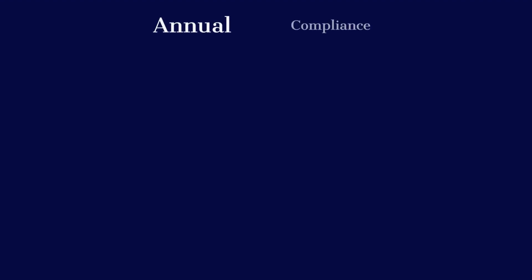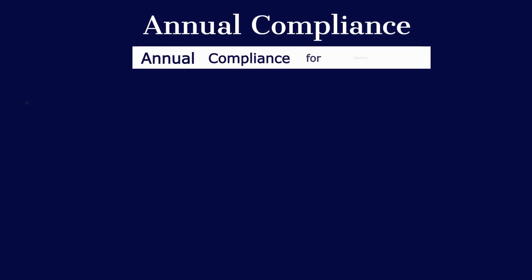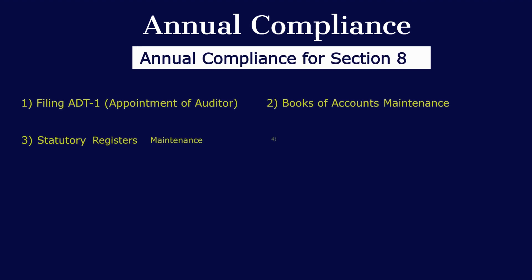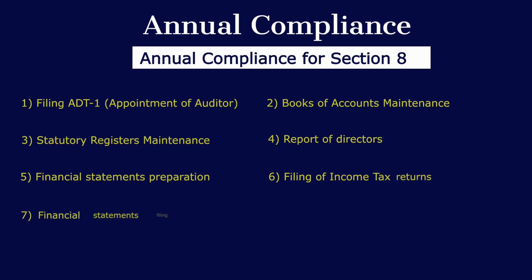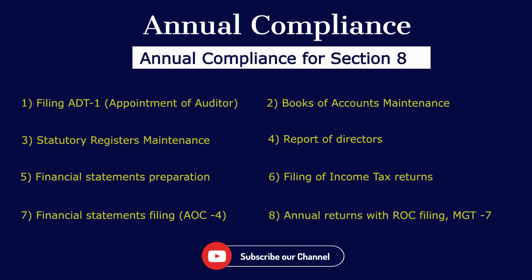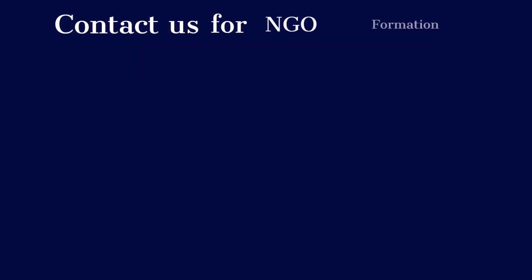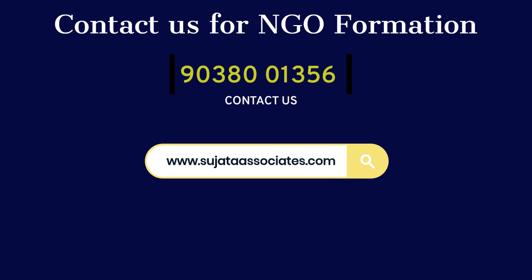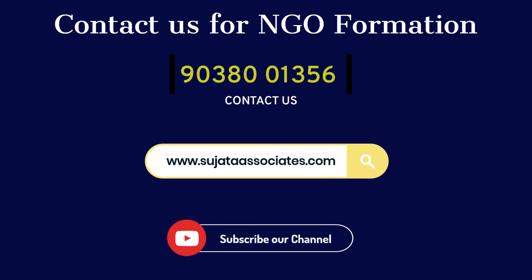Annual compliance for a Section 8 company includes: 1) filing ADT-1 for appointment of auditor; 2) books of accounts maintenance; 3) statutory registers maintenance; 4) report of directors; 5) financial statements preparation; 6) filing of income tax returns; 7) financial statements filing; 8) annual returns with ROC filing MGT-7. Contact us for NGO formation: call 90380-01356 or visit www.sujataassociates.com. Subscribe to our channel.